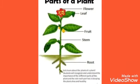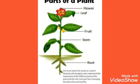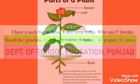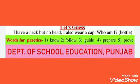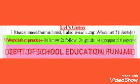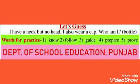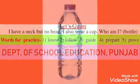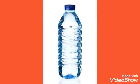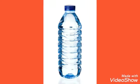Now the riddle: I have a neck but no head. I also wear a cap. Who am I? I am a bottle. I hope you all understood very well. Thank you.